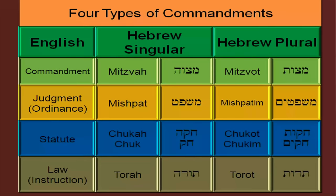There are four types of commandments or laws — I'm showing you the singular and the plural. In English going down: a commandment, a judgment or ordinance, a statute or law, or instruction. In Hebrew, the word for commandment is a mitzvah — M, T, Z, V, H. That is a singular commandment. In the plural it's mitzvot. The only difference is the last letter changes from a hey to a tav, which makes it from singular to plural.